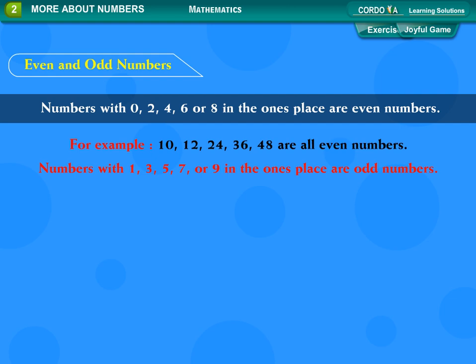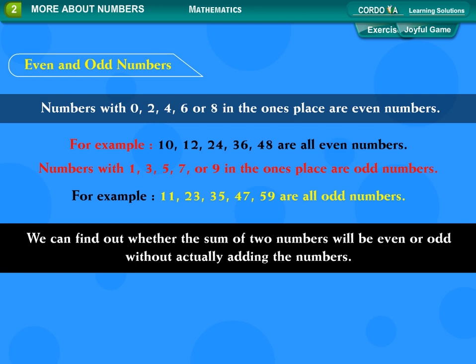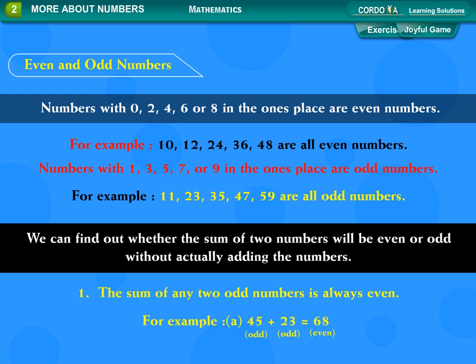Numbers with 1, 3, 5, 7, or 9 in the ones place are odd numbers. For example: 11, 23, 35, 47, 59 are all odd numbers. We can find out whether the sum of two numbers will be even or odd without actually adding the numbers. The sum of any two odd numbers is always even. For example: 45 odd plus 23 odd equals 68 even.